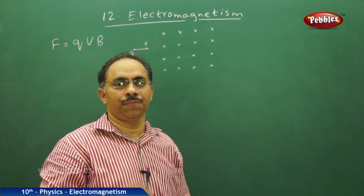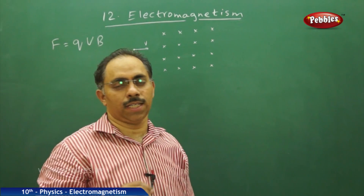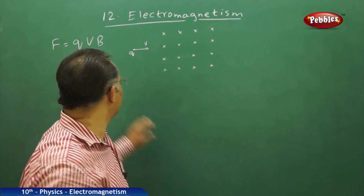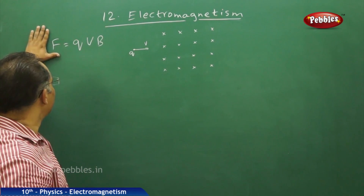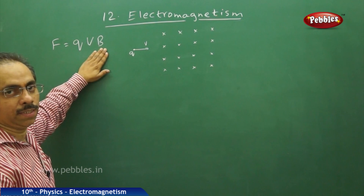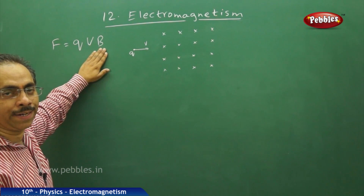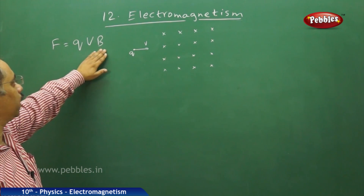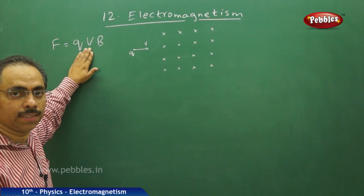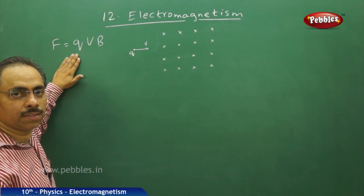To know the magnitude of the force on a charge moving in a magnetic field, this is the expression: F is equal to Q into V into B. B is the magnetic field strength or magnetic induction field, V is the velocity of the charged particle, and Q is the magnitude of the charge.